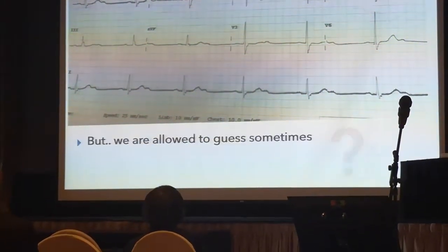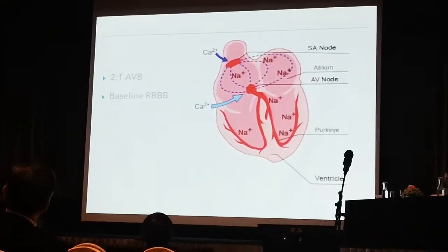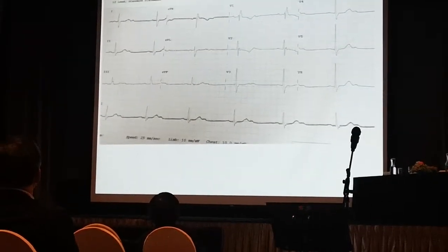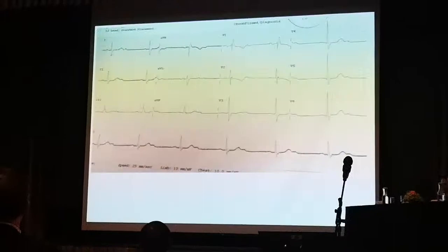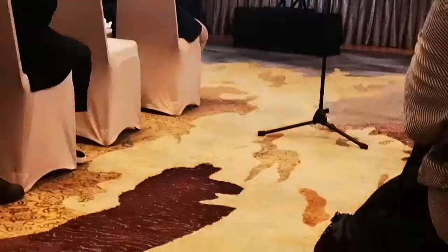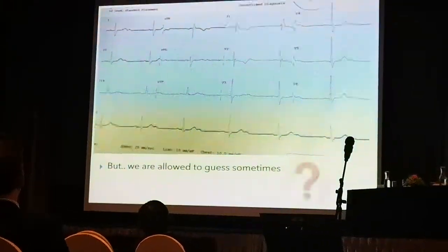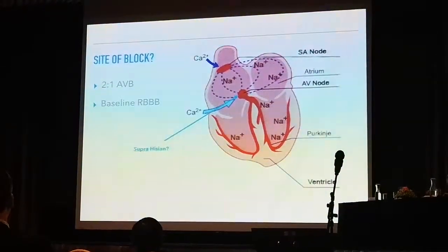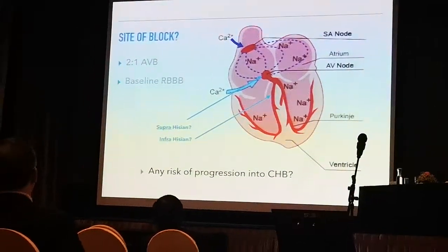Do you want to guess this is Mobitz Type 1, which is quite safe, or Mobitz Type 2, which is not so safe? I guess it's Type 2 as well — why? Because this patient has a baseline ECG of right bundle branch block. A baseline ECG of right bundle branch block means that even without doing anything, the conduction in the right bundle is already sick. So if we close our eyes and guess, obviously the conduction system is not doing very well — meaning this 2-to-1 AV block most likely has to do with Mobitz Type 2. Is this patient having supra-hisian or infra-hisian block? The risk of progression into complete heart block is high and real.